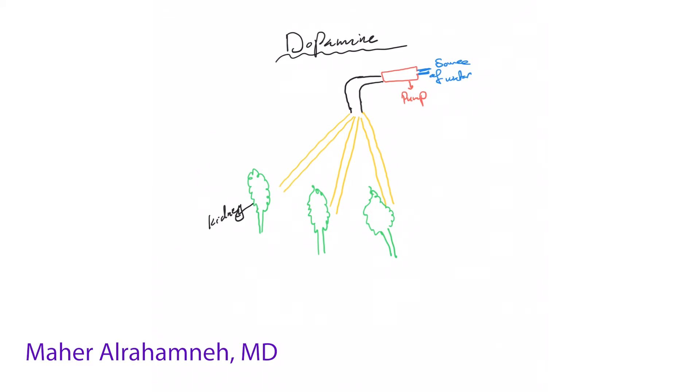Welcome back, let's move and talk about dopamine. The reason I put dopamine after levophed, norepinephrine, and vasopressin is because usually it's an alternative to norepinephrine. Whenever we cannot use norepinephrine, we can use dopamine as a replacement.